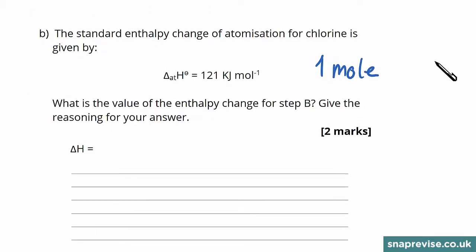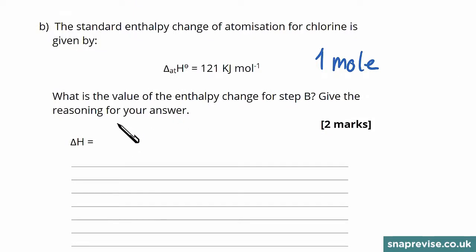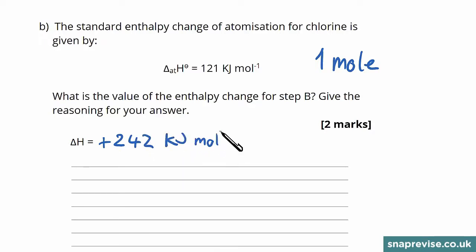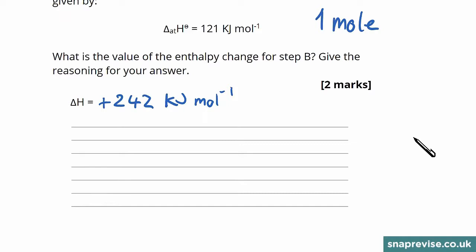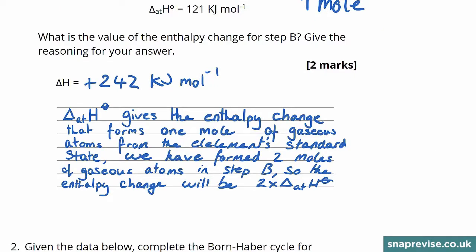So the enthalpy change will double because we're making two moles instead of one — it's like the reaction is happening twice over. The enthalpy change for step B is therefore 242 kJ per mole, which is twice the standard enthalpy change. The reasoning is that the standard enthalpy change of atomisation gives the enthalpy change that forms one mole of gaseous atoms from the element's standard state; we've formed two moles in step B, so the enthalpy change is twice the standard enthalpy change of atomisation. You get one mark for doubling and a second mark for stating the reason.